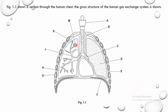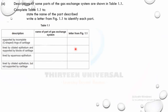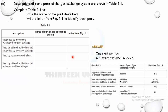So in summary: B is trachea, C and J are bronchi, H is bronchiole, and M is alveolus. Check the table to confirm you understand each label.